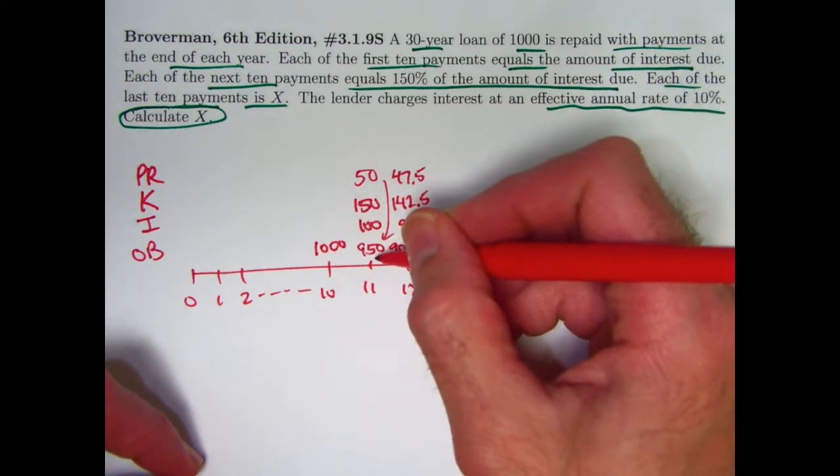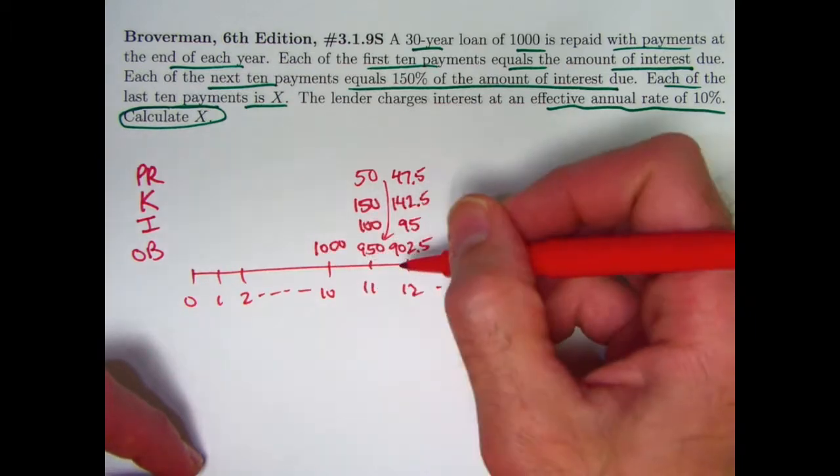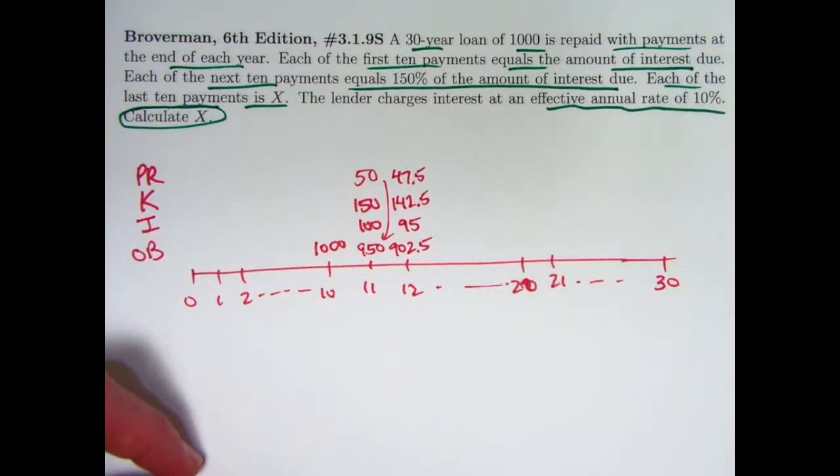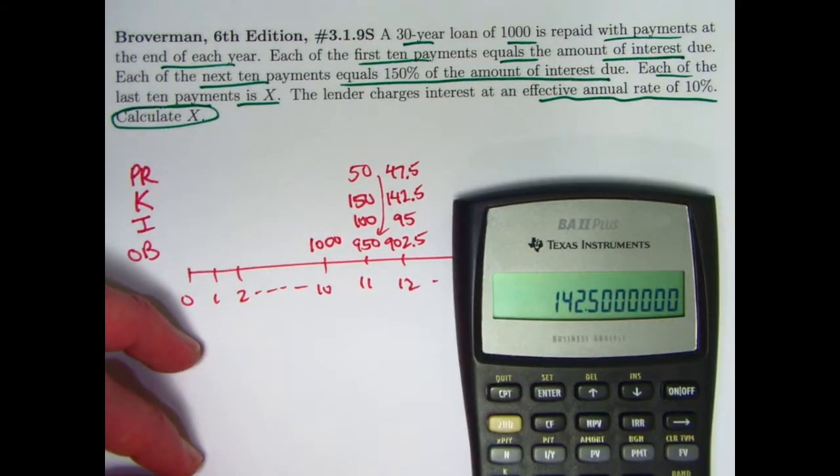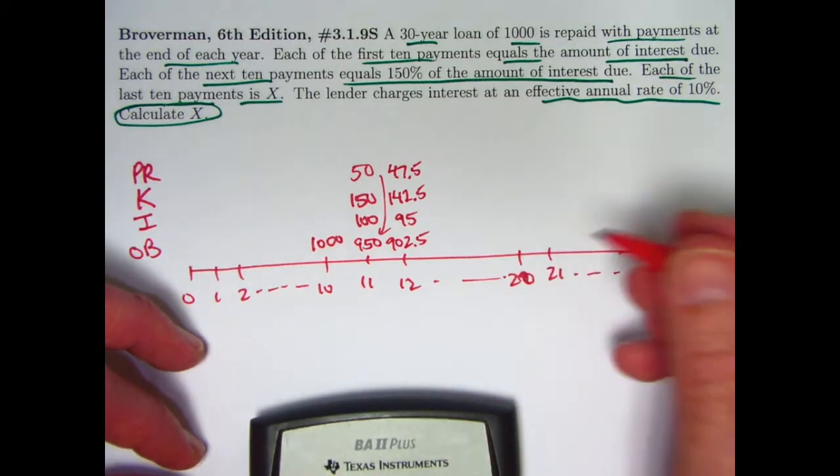Therefore, the new balance is always 95% of the preceding balance. 950 is 95% of 1,000. 902.5 is 95% of 950. You can double check that. Take 902.5 divided by 950, you get 0.95, 95%. And that pattern would hold.